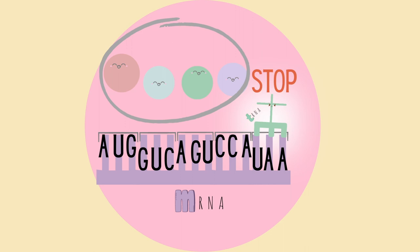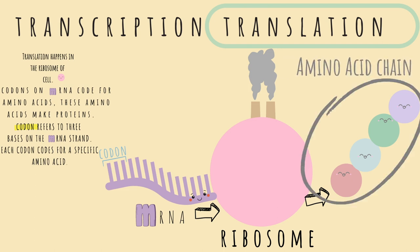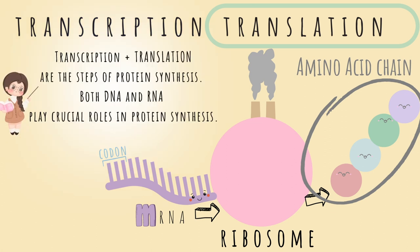Let's take a step back and look at the big picture. The result inside the ribosome is an amino acid chain that eventually becomes a protein, created with the help of tRNA and mRNA. rRNA basically makes the structure of the ribosome. To summarize, transcription and translation are the steps of protein synthesis, and both DNA and RNA play crucial roles.